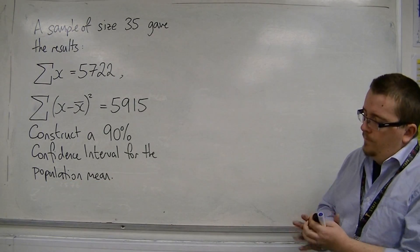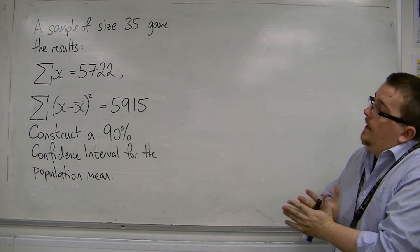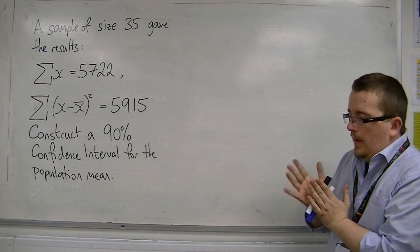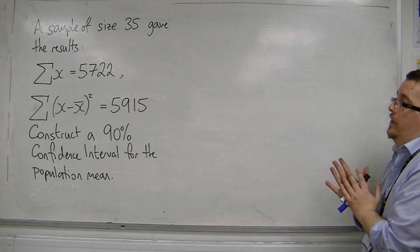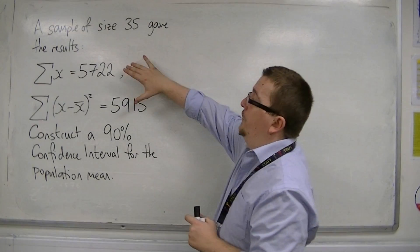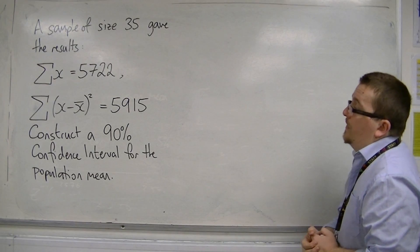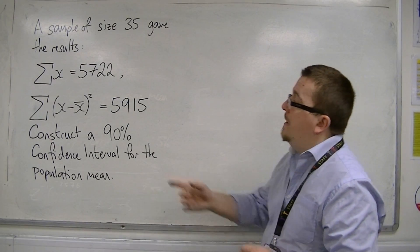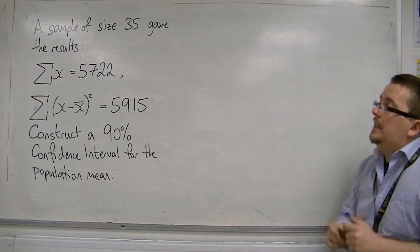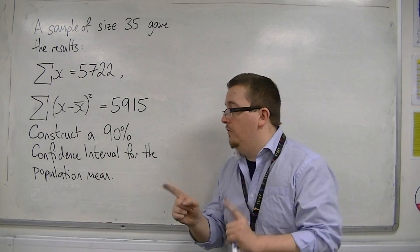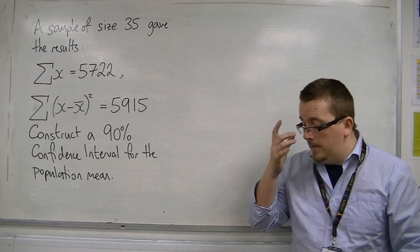In this video, the last one for confidence intervals in this set, we have a sample of size 35 that gave us the results. The sum of the x's was 5,722, and the sum of (x minus the mean) all squared is equal to 5,915. We want to construct a 90% confidence interval for the population mean.